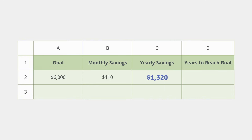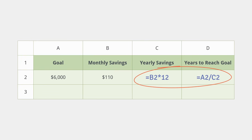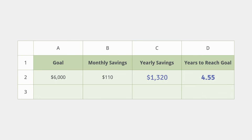Now that we have this number, we're just one step away from solving the problem. All we have to do is create a second formula that divides our goal by the amount that we'll be saving each year. Notice how we've really thought this through — instead of writing one big formula, we wrote two smaller formulas, and that makes the problem much easier to handle. Looks like it'll take about four and a half years to save enough money for the jet ski. That's a lot longer than I thought — maybe you can buy a used jet ski.